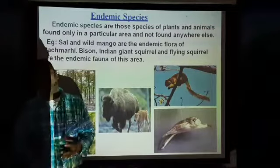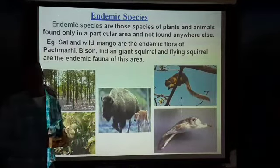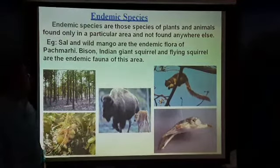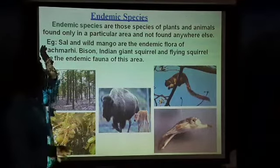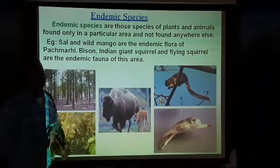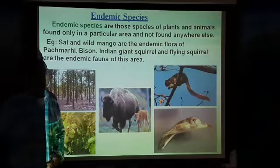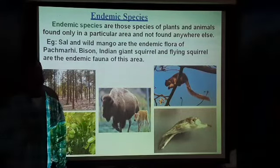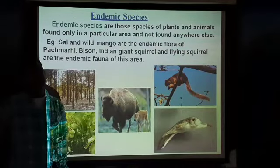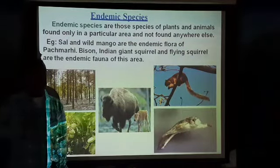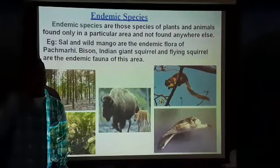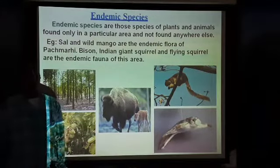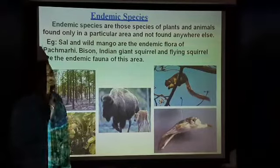For example, apples are usually seen growing in Kashmir because that is the place where they can grow — it is quite suitable for them. Plants or animals that live or grow in a particular area where conditions are suitable for them are called endemic species, or endemic plants, or endemic animals. For example, sal and wild mango are the endemic flora of Pachmarhi, and bison, Indian giant squirrel, and flying squirrel are the endemic fauna of this area.